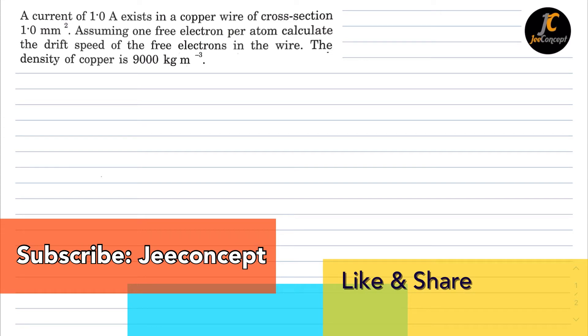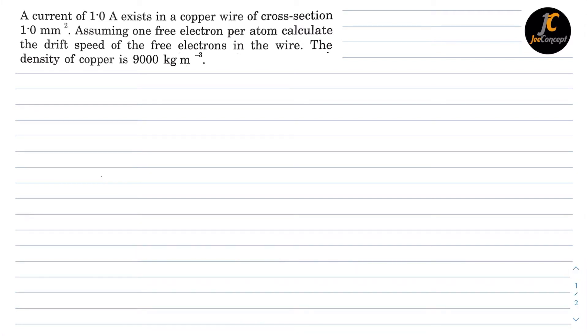Hello everyone, in this video we will find the solution of the question which says a current of 1 ampere exists in a copper wire of cross section 1 mm square, assuming 1 free electron per atom, calculate the drift speed of free electrons in the wire. The density of copper is 9000 kg per cubic meter. So we know the relation